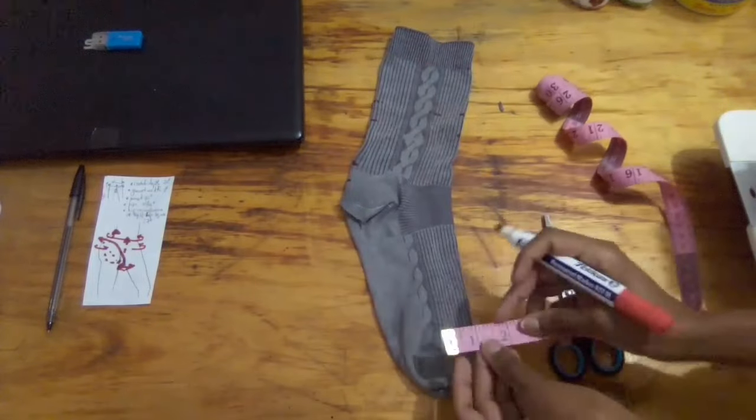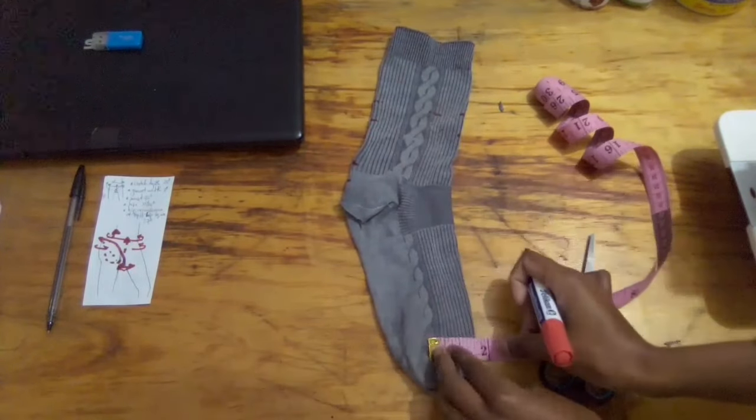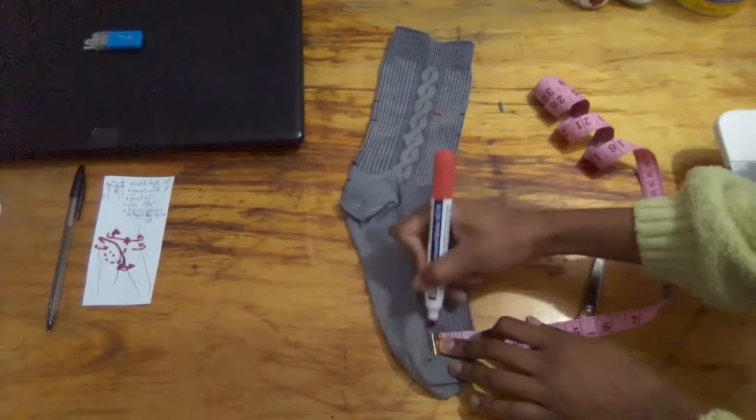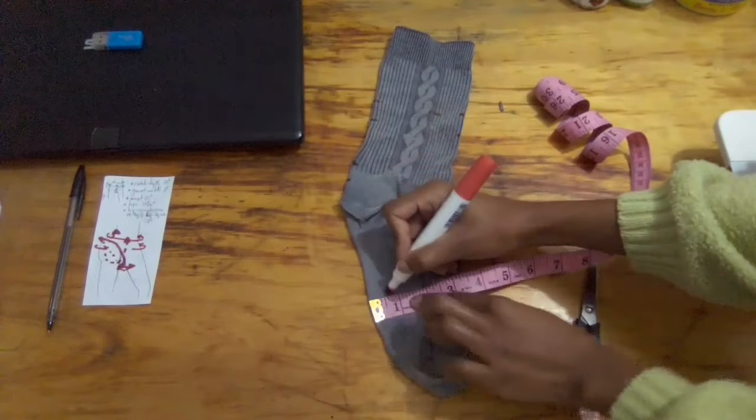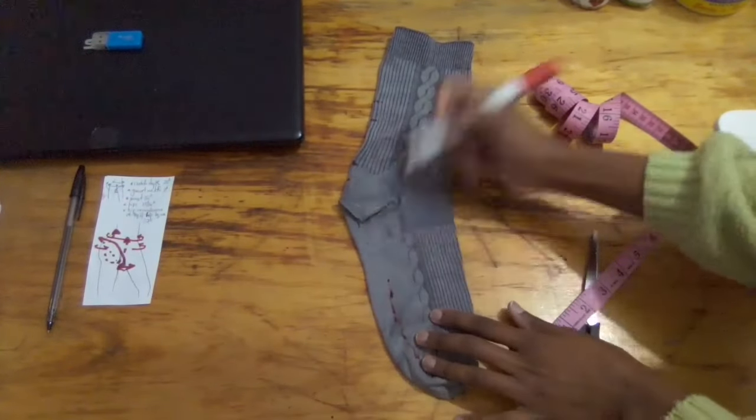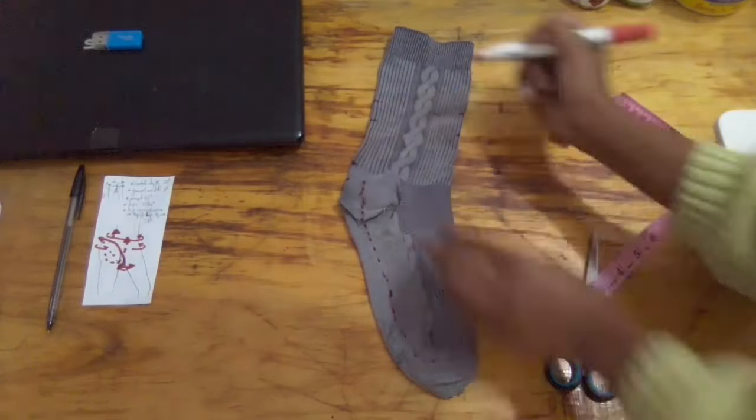Now I'm measuring half my gusset width, that's one and a half inches because my gusset was three inches. The back will be about an inch wide or three quarters of an inch, so that's what I marked.